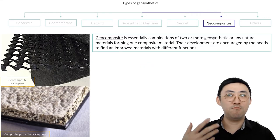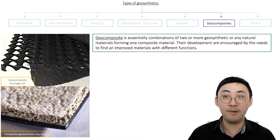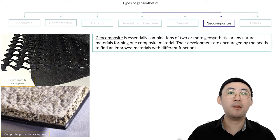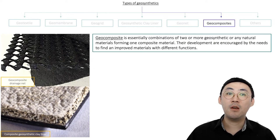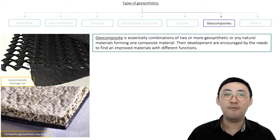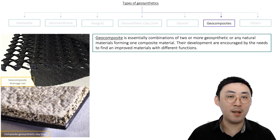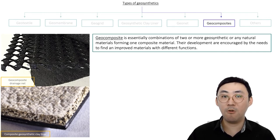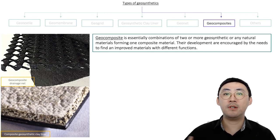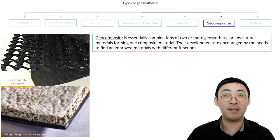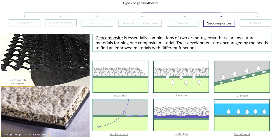Finally, we have geocomposites. Geocomposite is essentially a combination of two or more geosynthetic materials or natural occurring materials to form one composite product. For example, the geosynthetic clay liner with a bentonite clay core and two layers of geotextiles. We also have a composite drainage net — a combination of geonet and one or two layers of geotextiles — and a composite geosynthetic clay liner combining a bentonite clay core with a layer of geomembrane. These materials encompass a wide array of functions and are used in all kinds of applications, serving all six geosynthetic functions depending on the specific material.